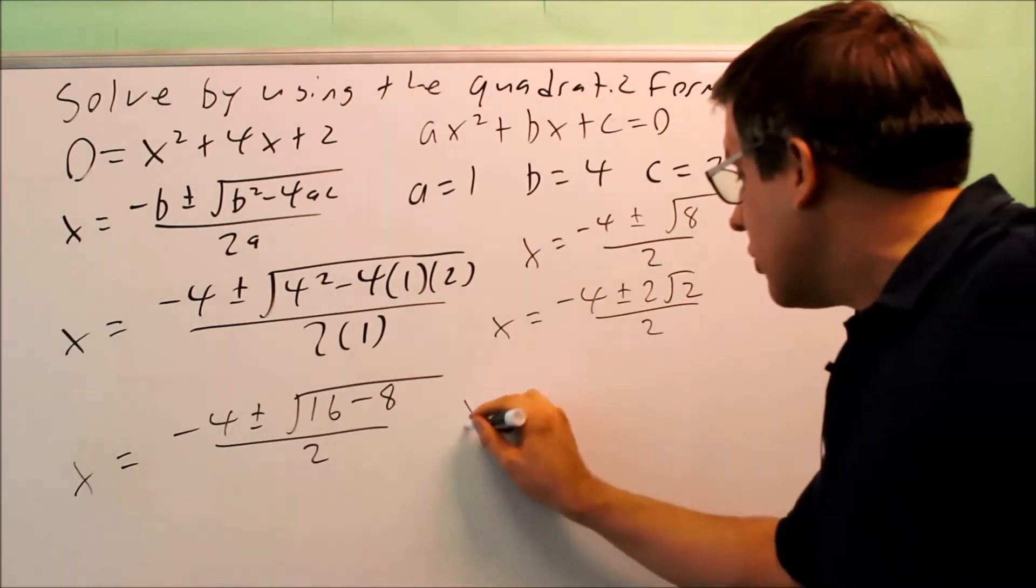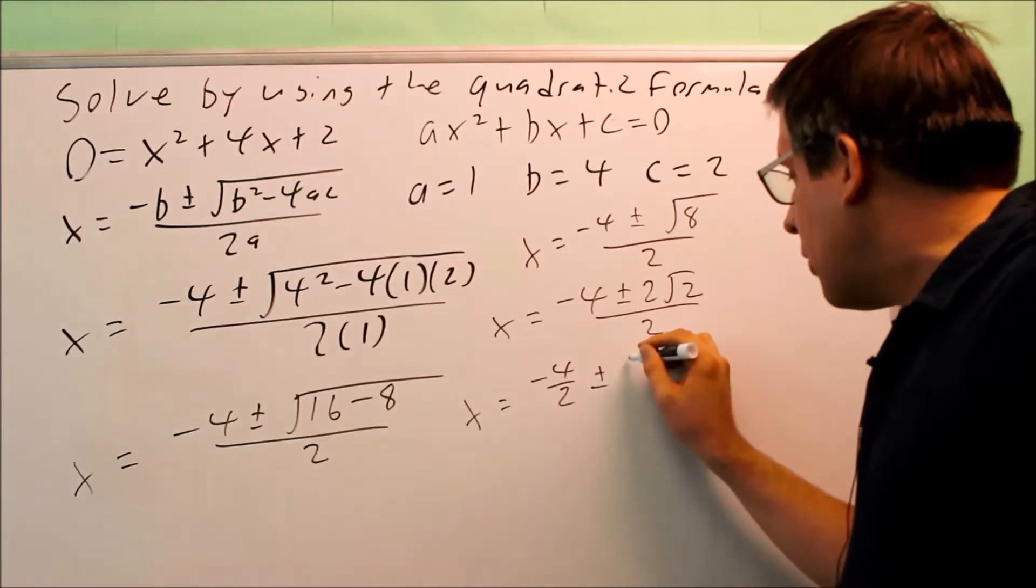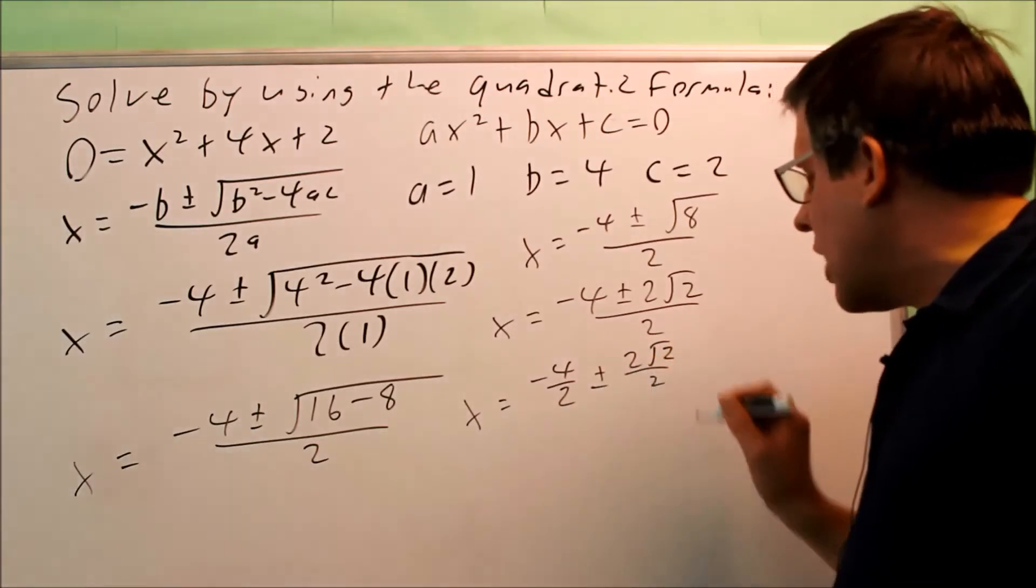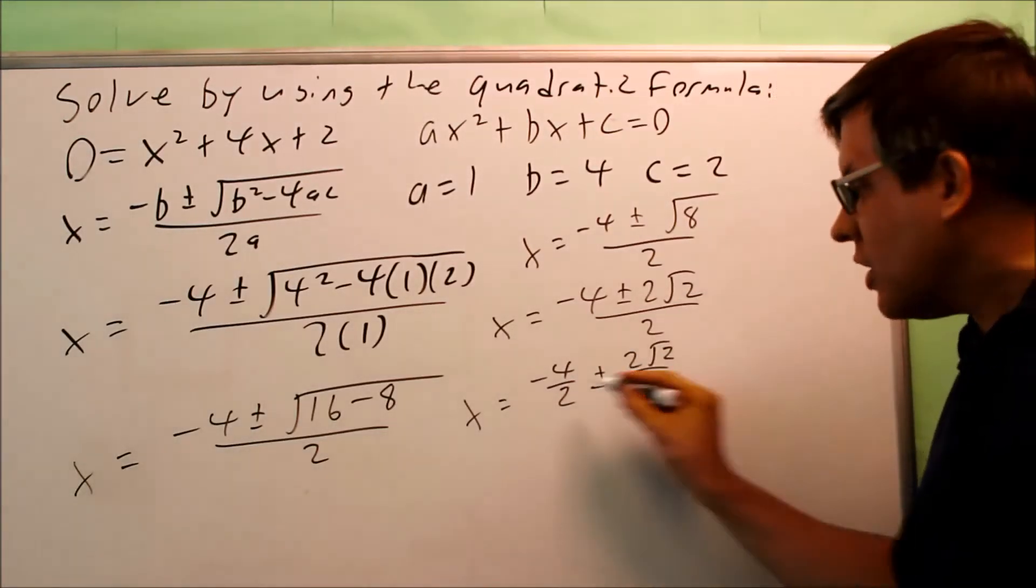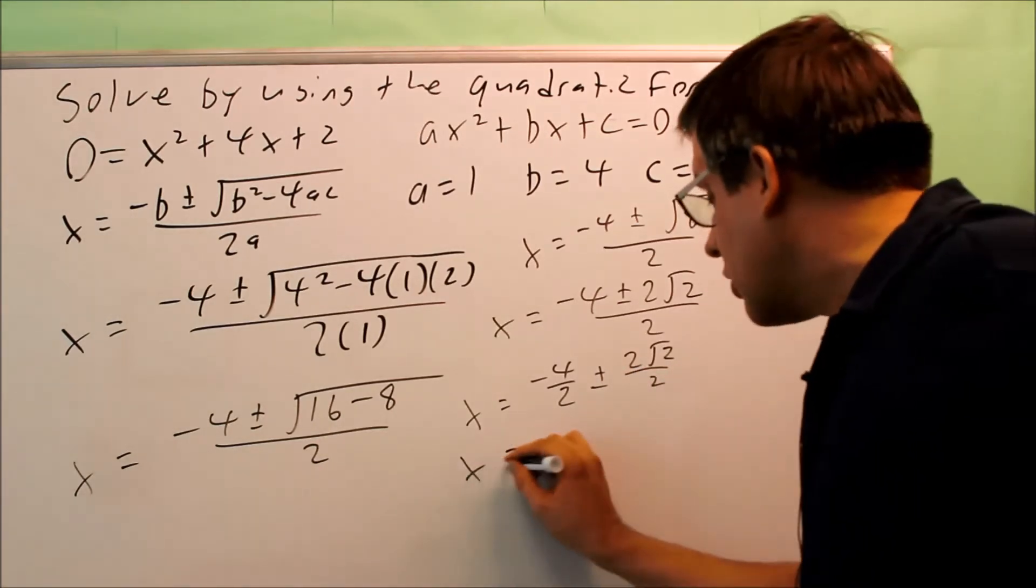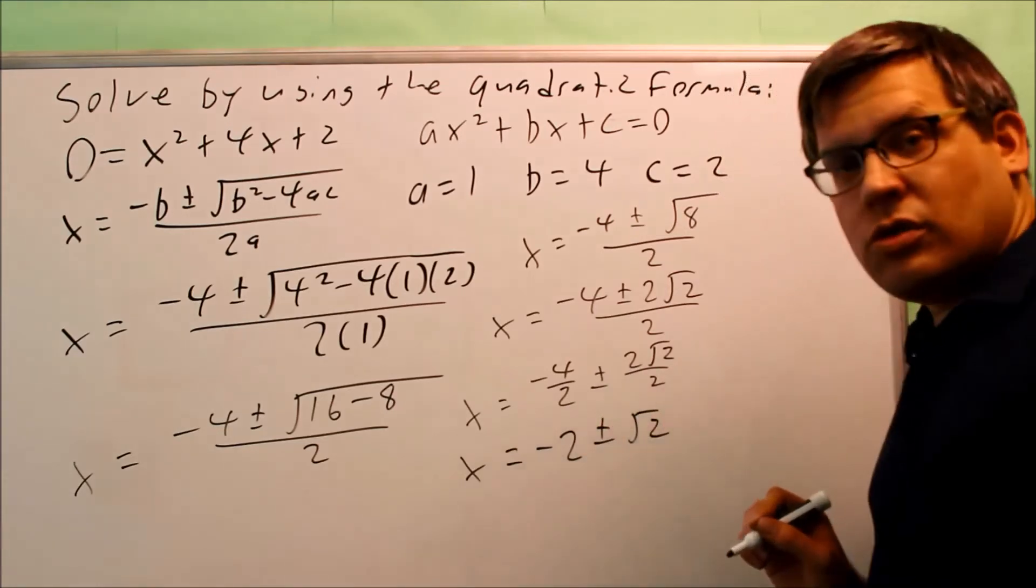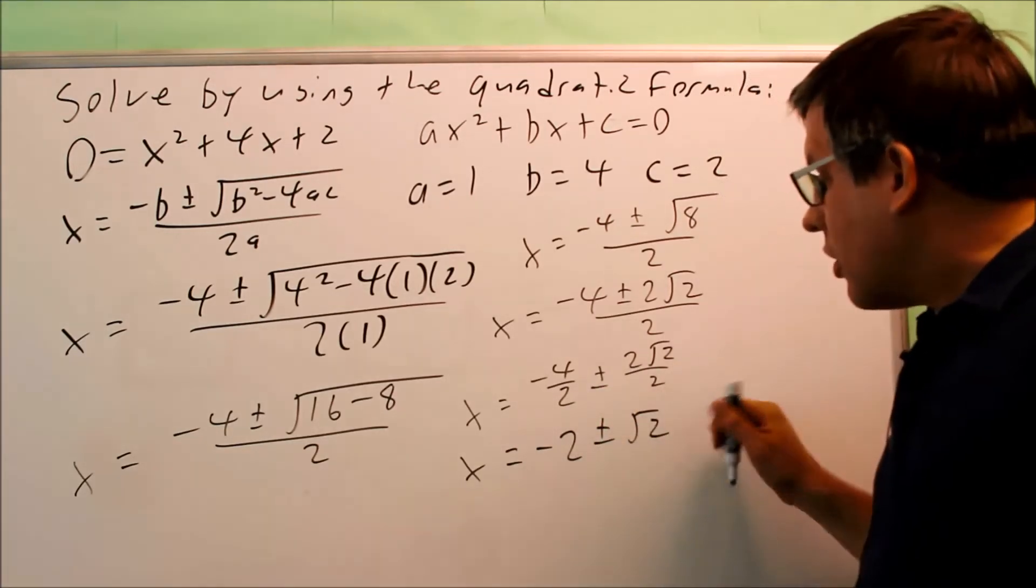Now that I'm done, what I need to do is I'm going to take that 2 on the bottom, and both of these I can divide by 2. So I'm splitting the fraction up, and each one of them I'm dividing individually by 2. And then I can reduce that to get negative 2 plus or minus radical 2, and this would be as far as I could go.